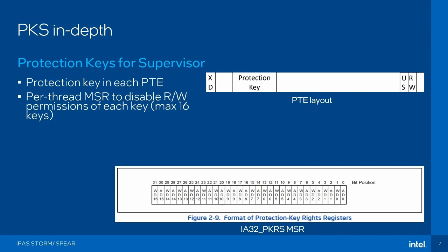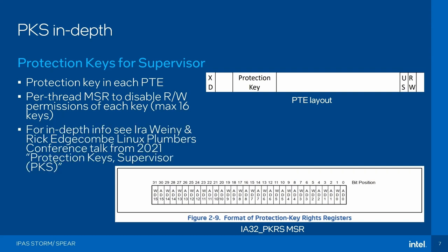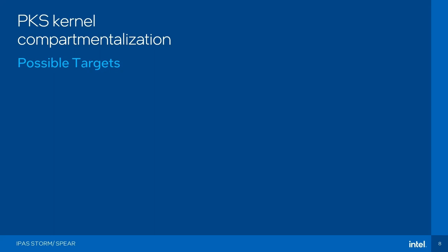Essentially you assign a certain domain to a page and you can overwrite the page table entry permissions in the corresponding index in an MSR. For a more detailed explanation of how this all works, have a look at IRS and Rick's Linux Plumbers talk from 2021 — they explain how they implemented this for the Linux kernel. So how can we use protection keys for supervisor for compartmentalization in the kernel?